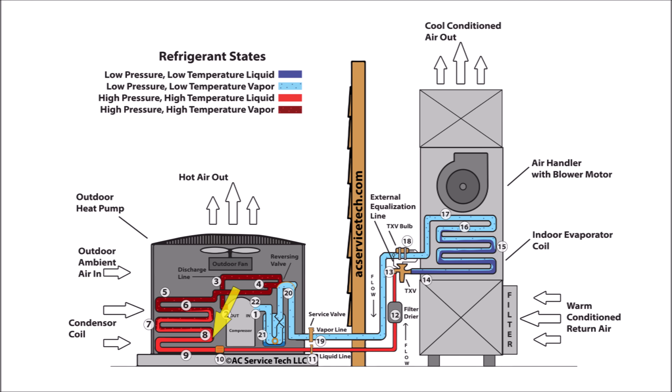In step eight, the saturated refrigerant rejects enough heat energy to turn completely into a liquid. This liquid then starts to lower in temperature — this lowering in temperature in the liquid form is called subcooling. In step nine, the liquid continues to reject heat and lower in temperature as it travels through the condenser; the refrigerant is in the process of subcooling.